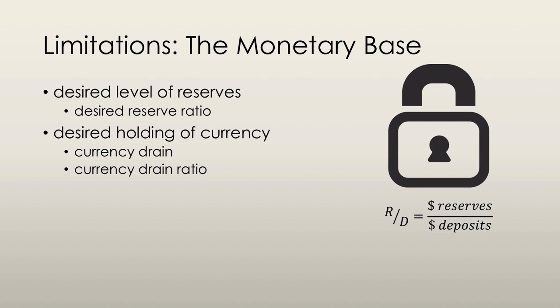The desired reserves are the reserves that a bank plans to hold. The required reserves, on a side note, are the minimum quantity of reserves that the bank must hold as regulated by the government. The desired reserve ratio is the ratio of reserves to deposits that the bank wants to hold. This ratio exceeds the required reserve ratio by the amount that the bank wants — it's up to the bank how much extra reserves they want to keep.